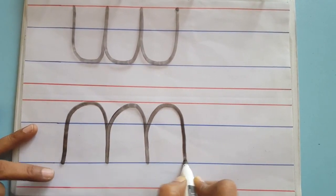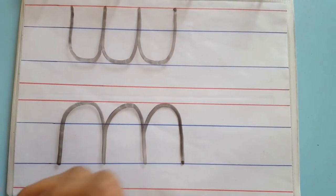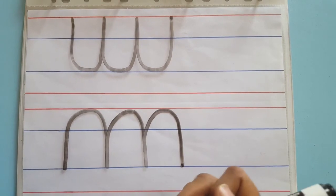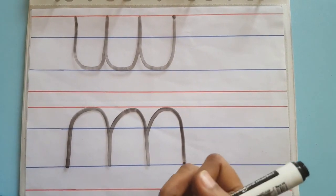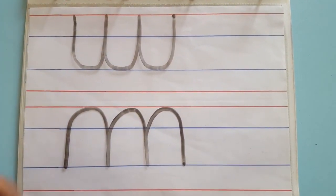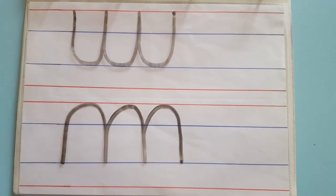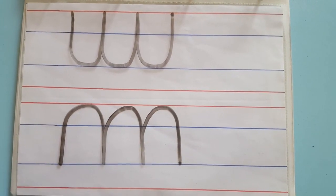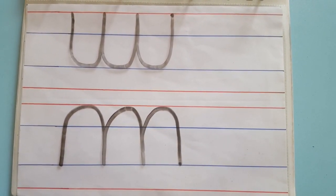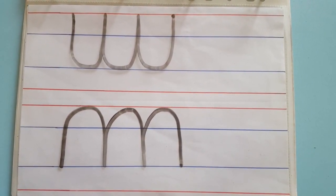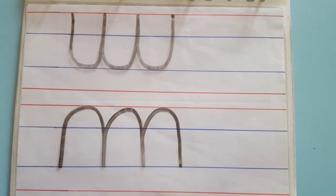So in today's video, we have learnt how to write the upward and the downward curve. In the next video, we will see how to write the zig zag lines and a circle. Thank you.